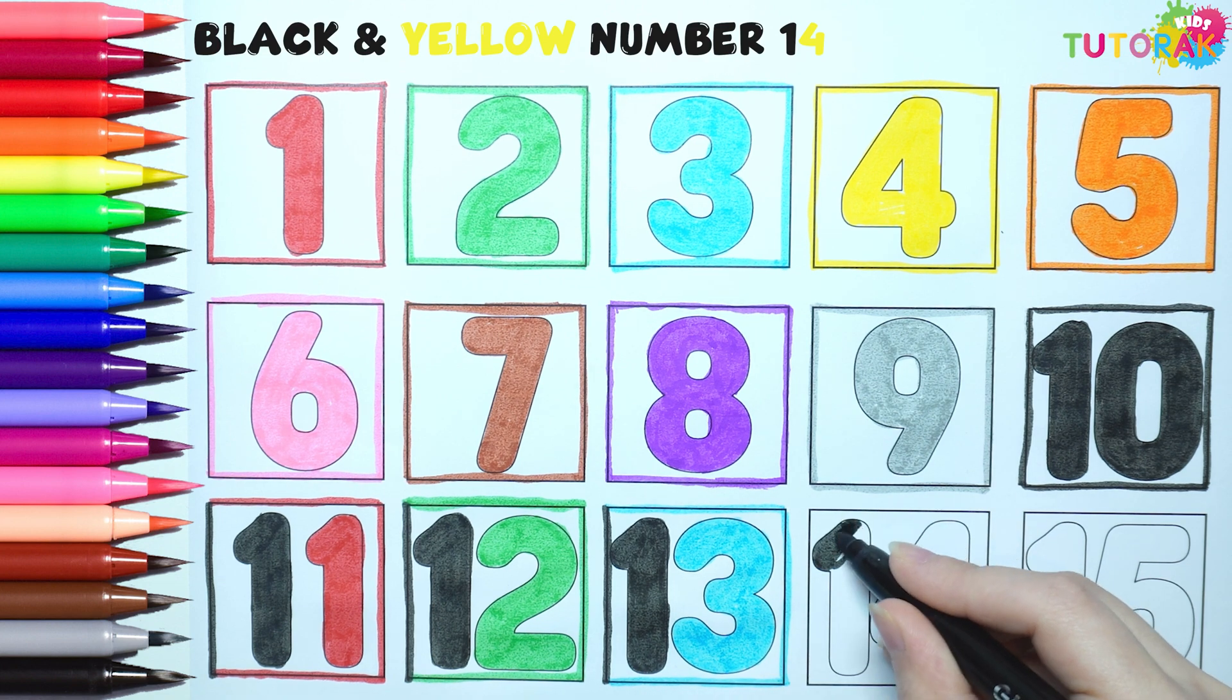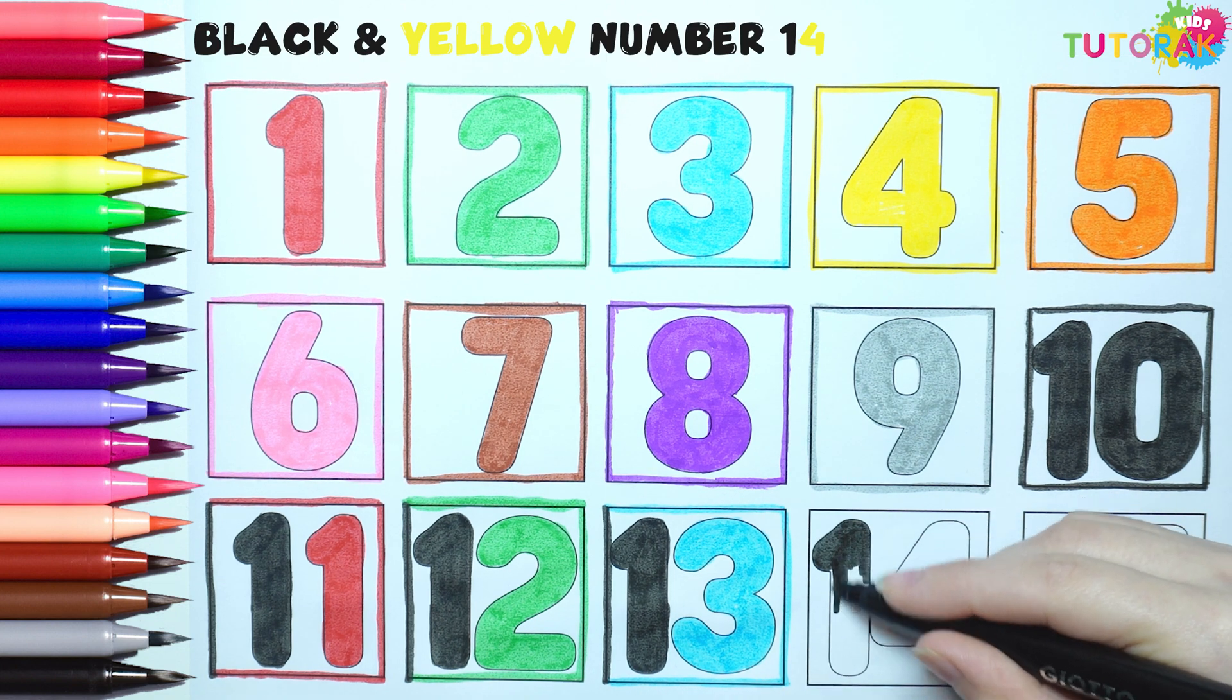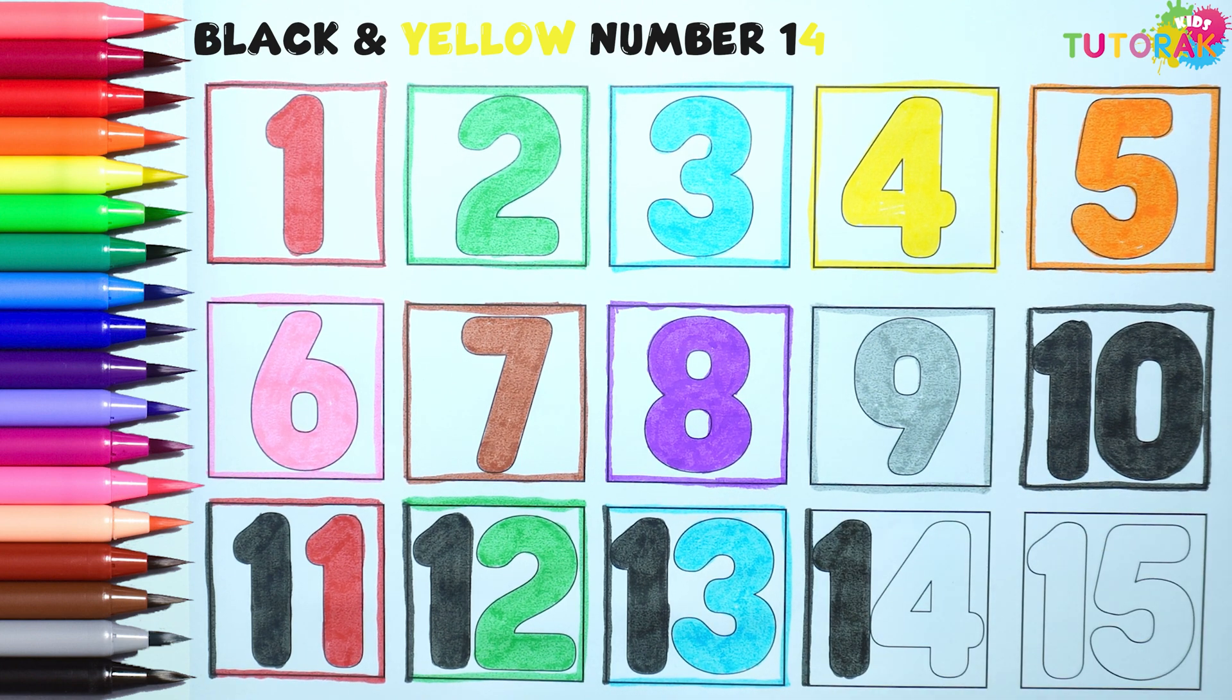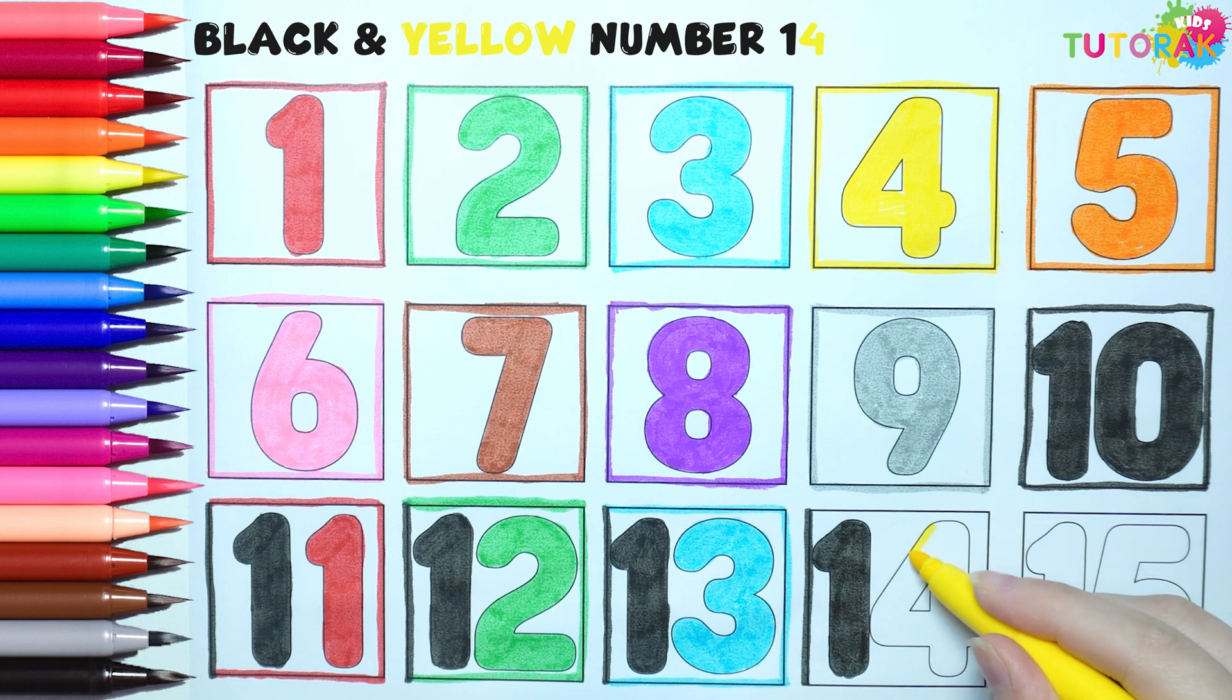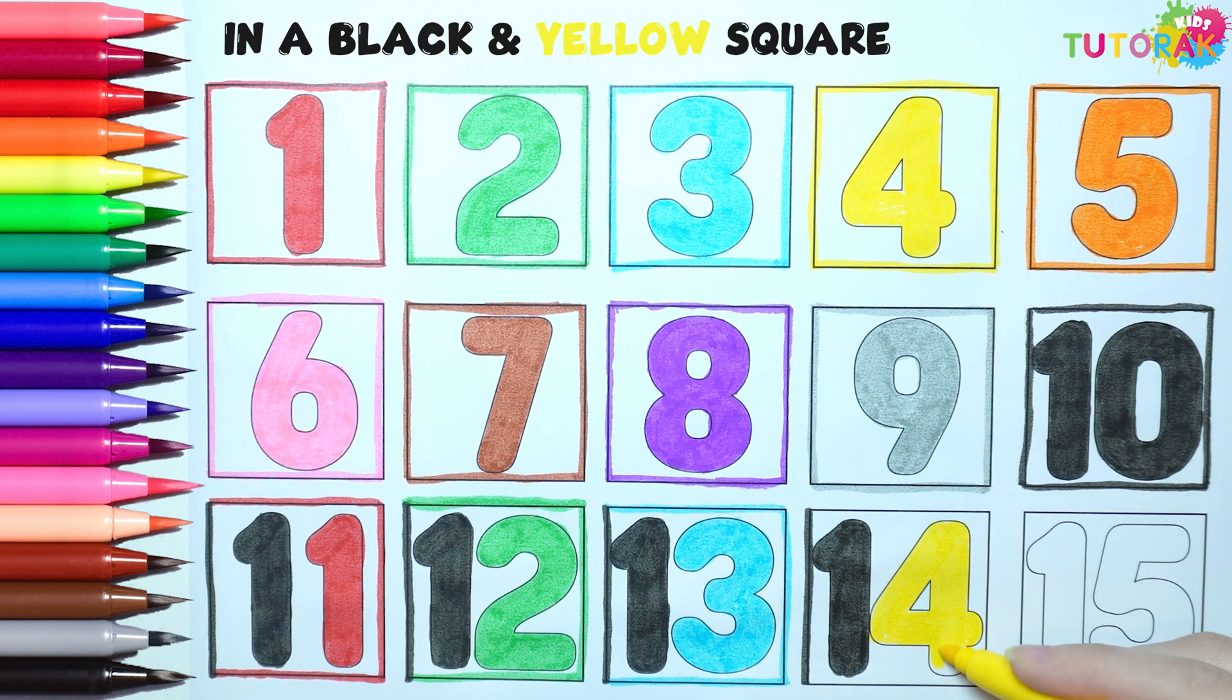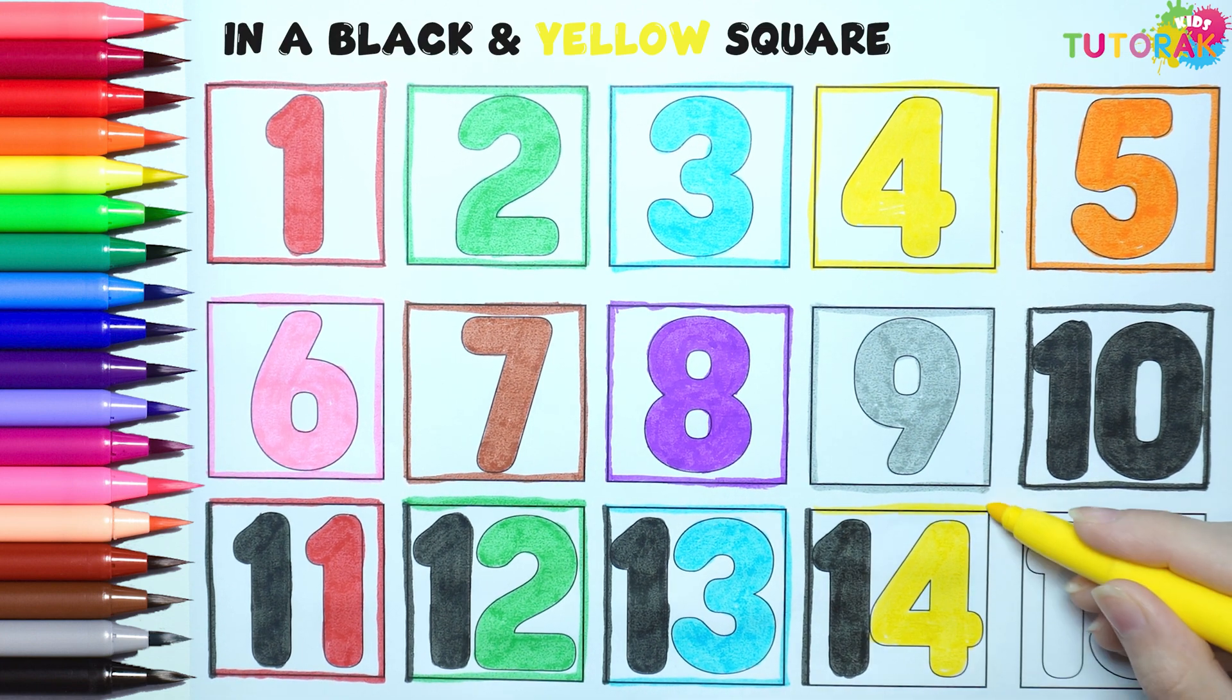10 plus 4 make 14. We have black and yellow 14 in a black and yellow square.